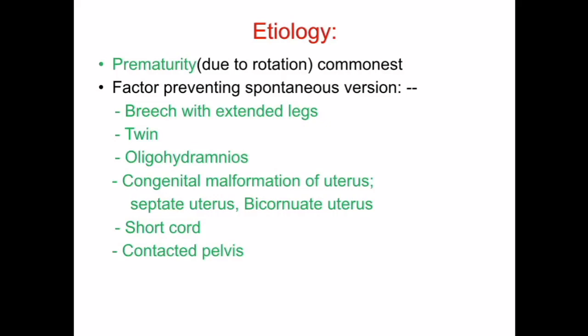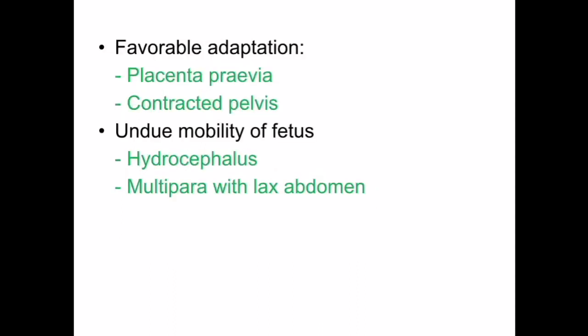The second etiological factor involves factors preventing spontaneous version. These include: breech with extended legs, twin pregnancies, oligohydramnios, congenital malformation of the uterus such as septate or bicornuate uterus, short cord, contracted pelvis, placenta previa, and undue mobility of the fetus with hydrocephalus or a multipara with a lax abdomen.